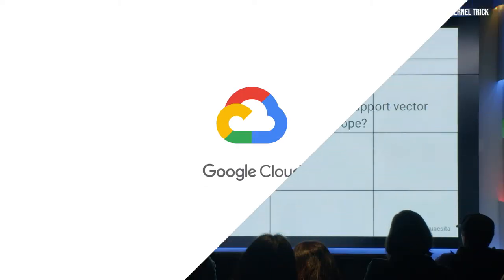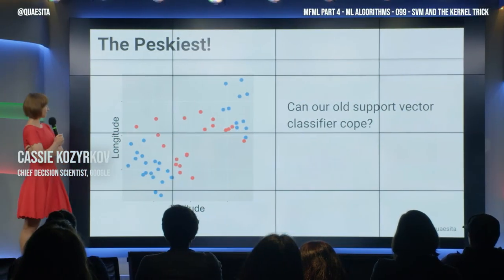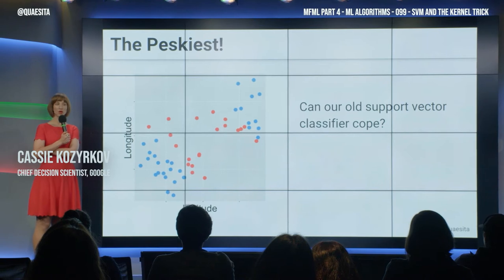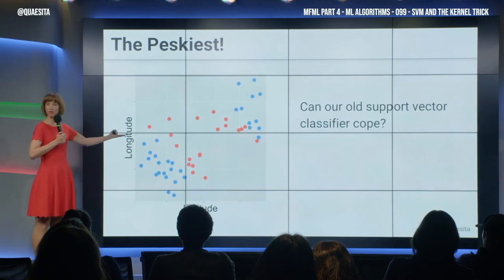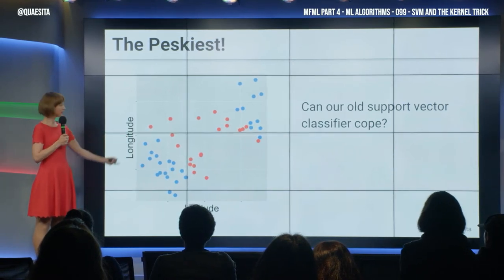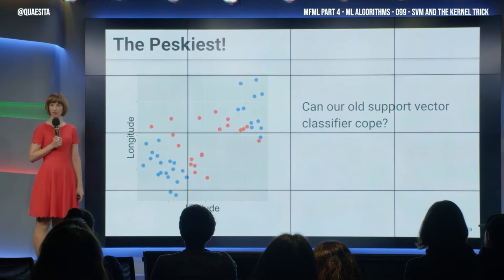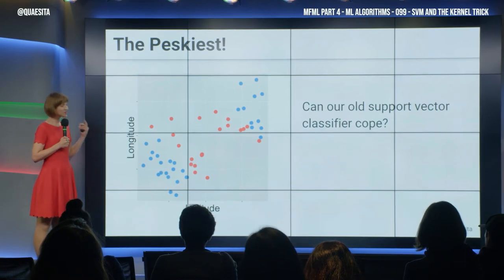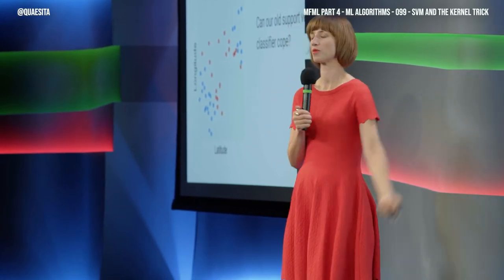The worst possible situation is where the modern buildings grow up around the historical buildings. This is terrible. Because for this whole section, we are only allowed to use one straight thing to separate the red from the blue. Where are we going to put it?